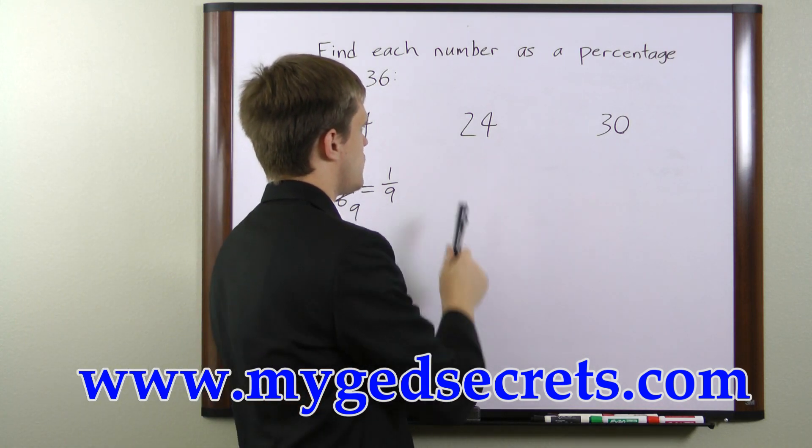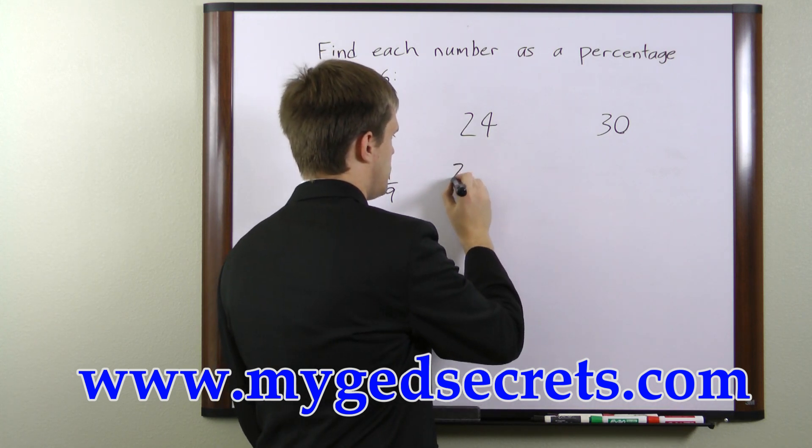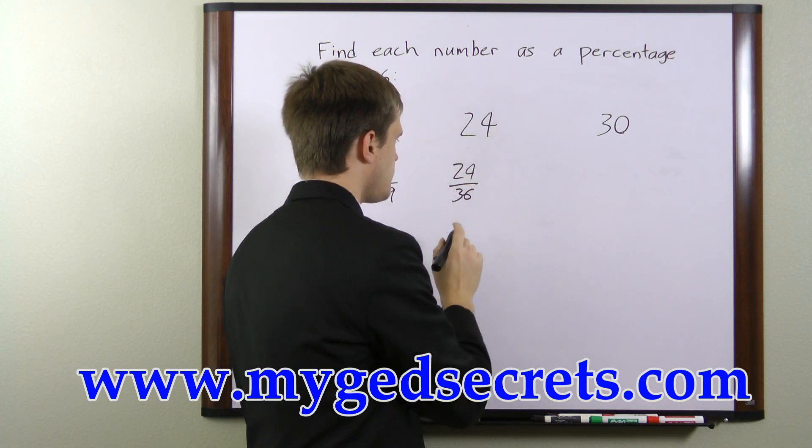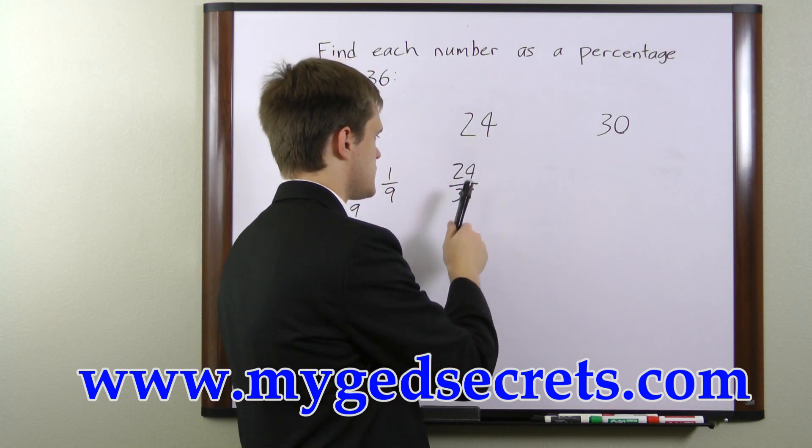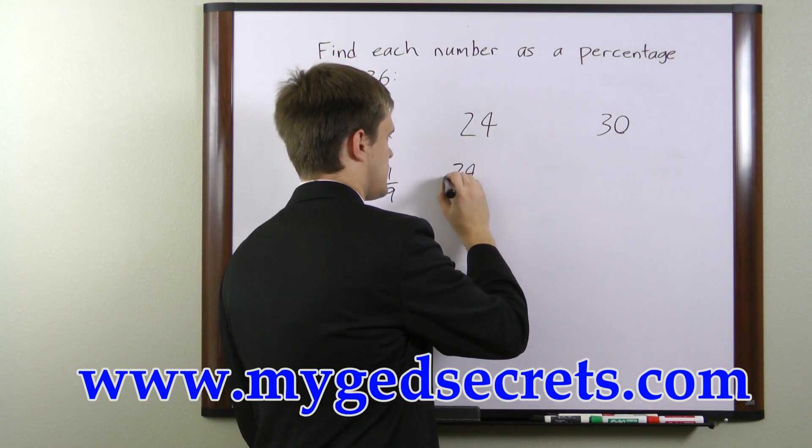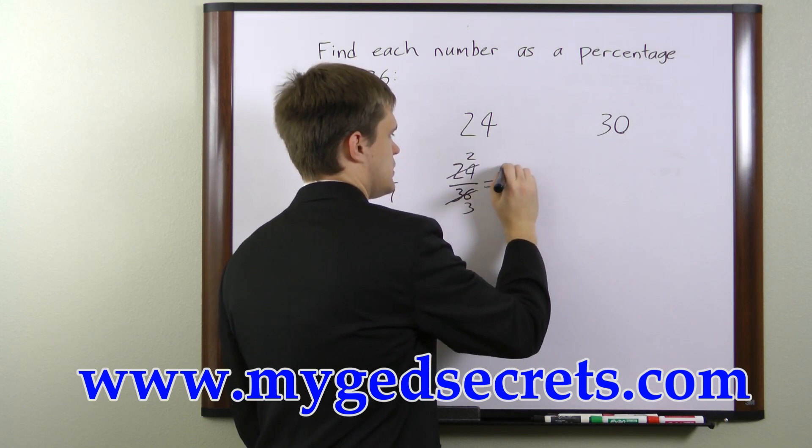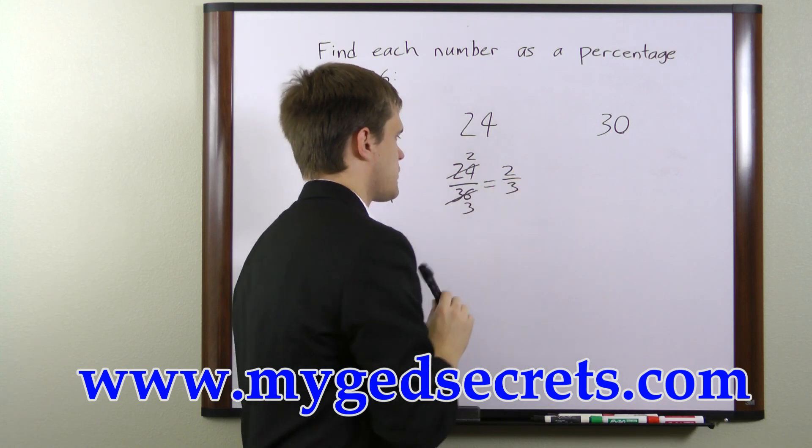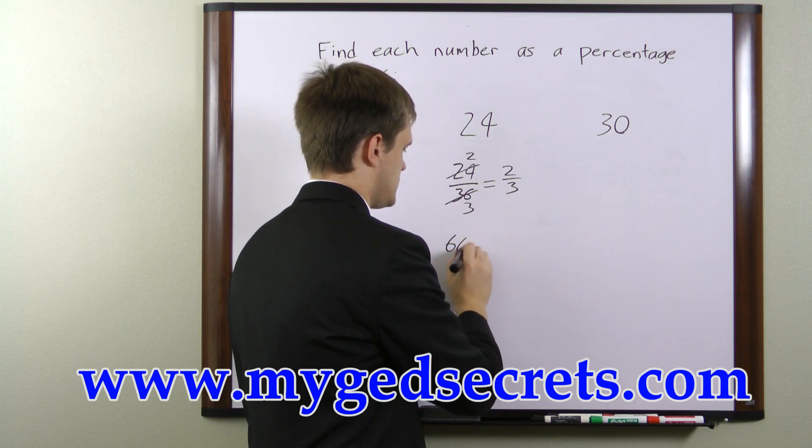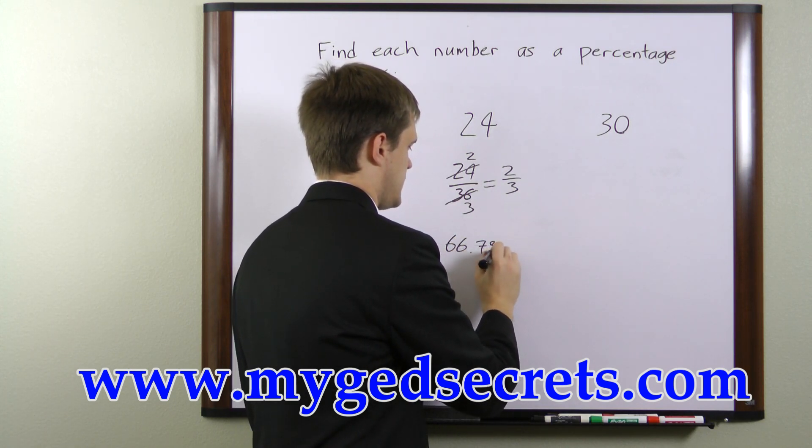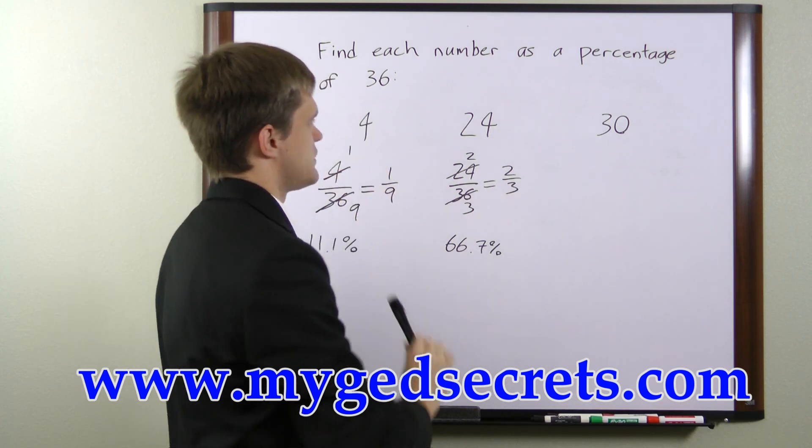The second example, we have 24, so to find the percentage we'll divide 24 by 36. We can divide top and bottom by 12 to reduce this fraction, so we'll divide 24 by 12 to get 2, and 36 by 12 to get 3. So we have 2 over 3. The percentage equivalent of 2 over 3 is 66.7 percent. So 24 is 66.7 percent of 36.